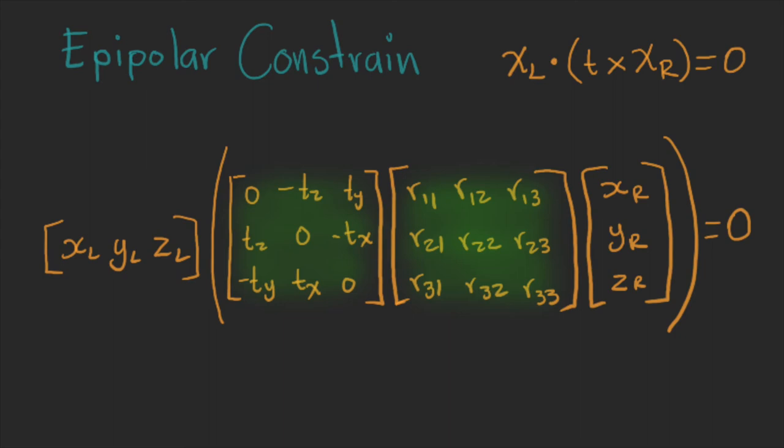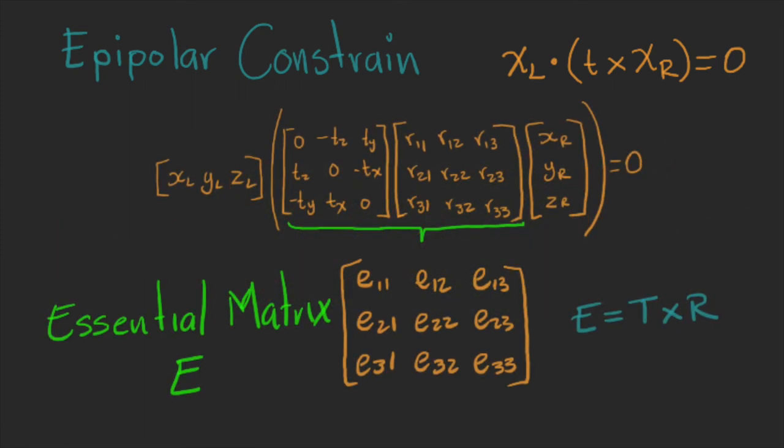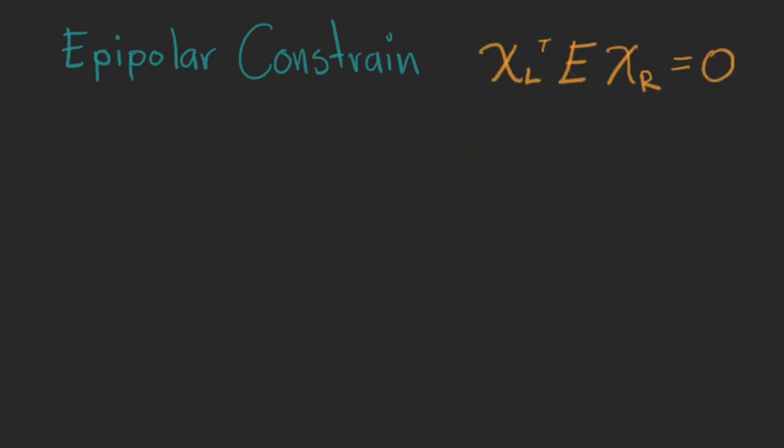When we multiply these two matrices, we obtain the essential matrix. That is a 3x3 matrix that contains all the information needed. So, in its simplified form, we can write it like this: xl transpose multiplied by the essential matrix multiplied by xr equals to zero.